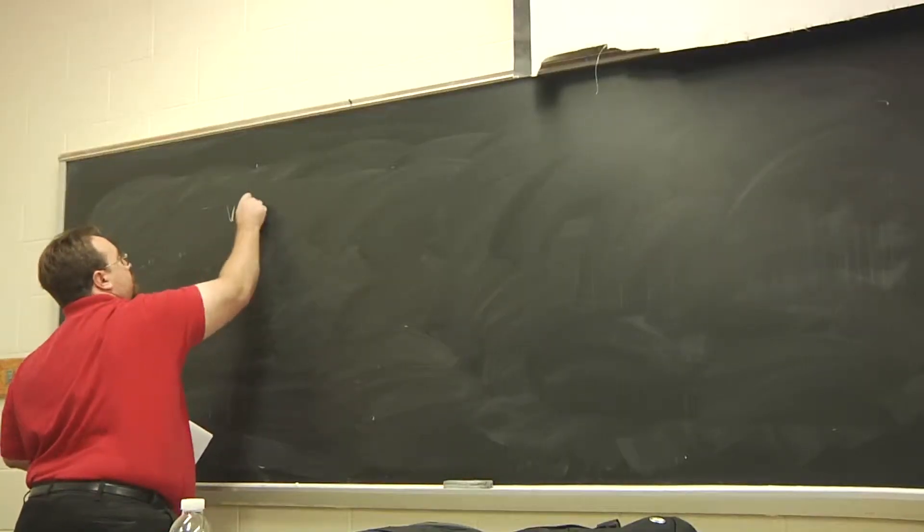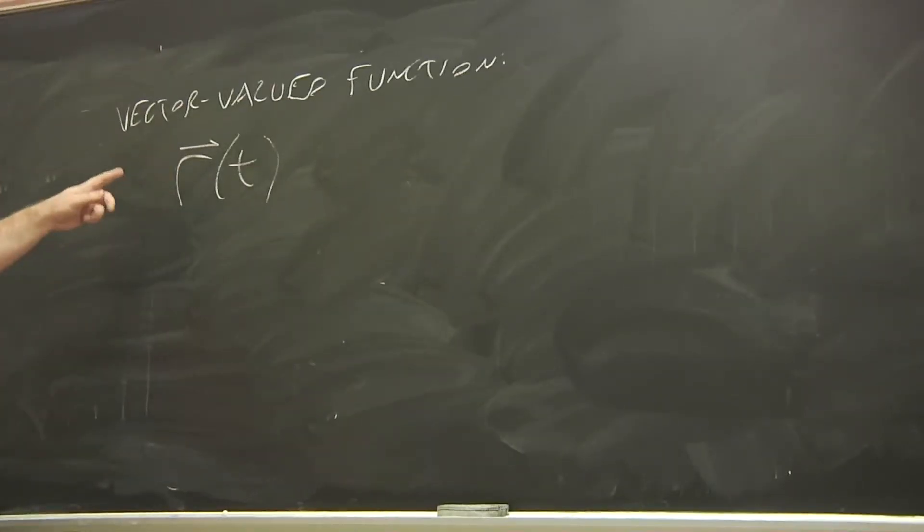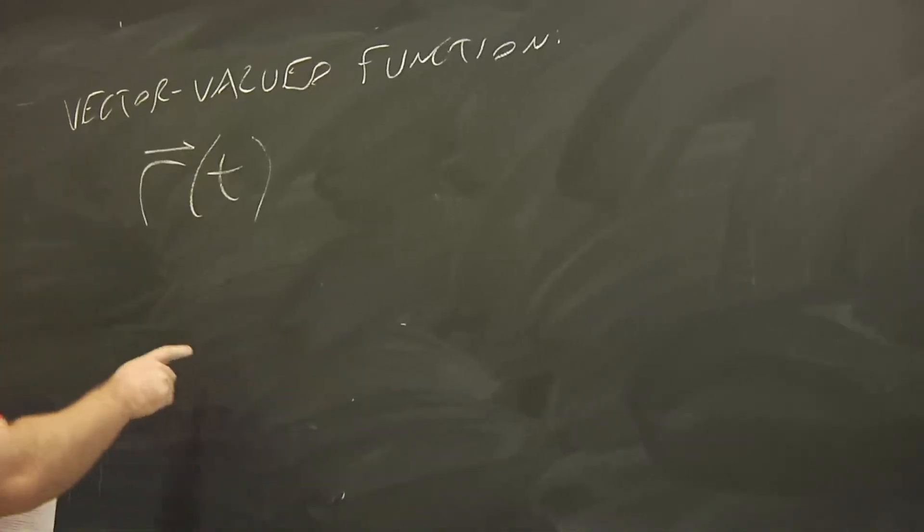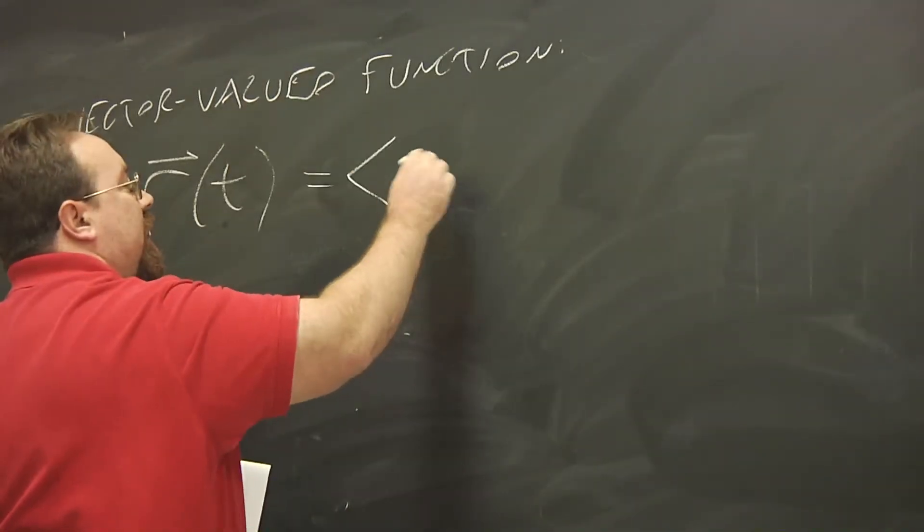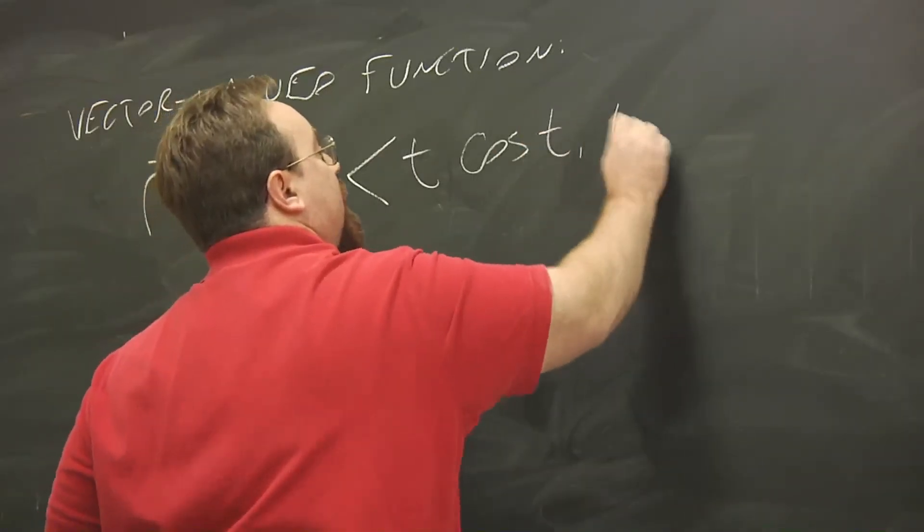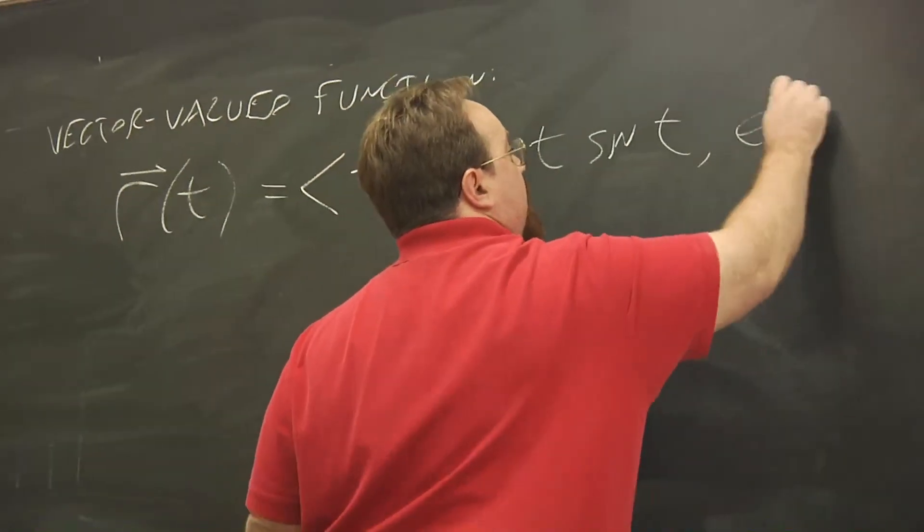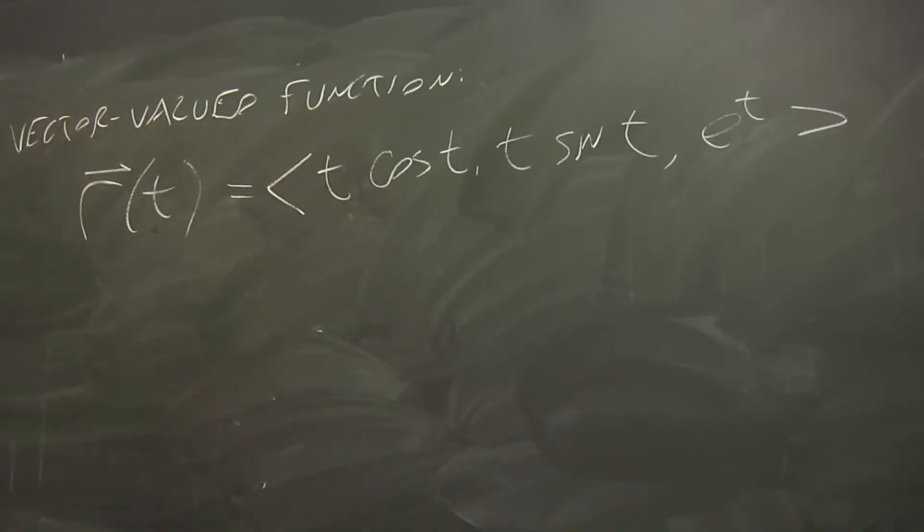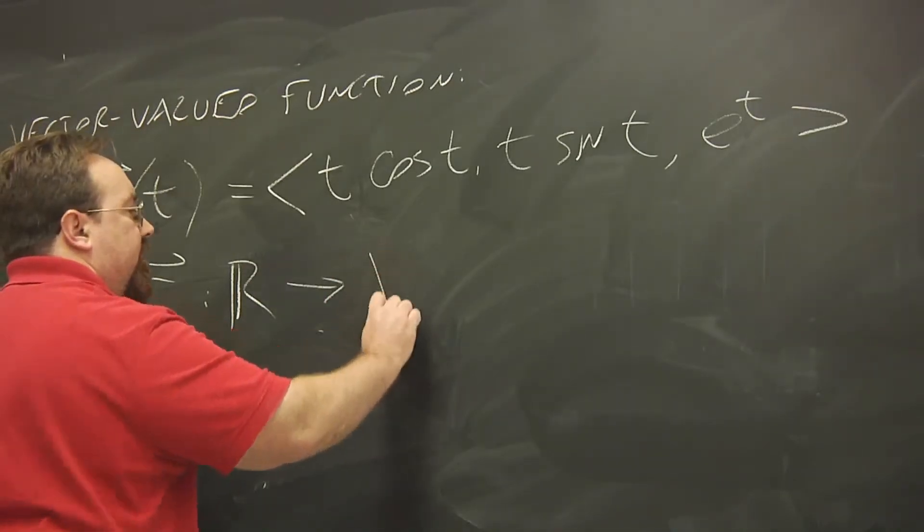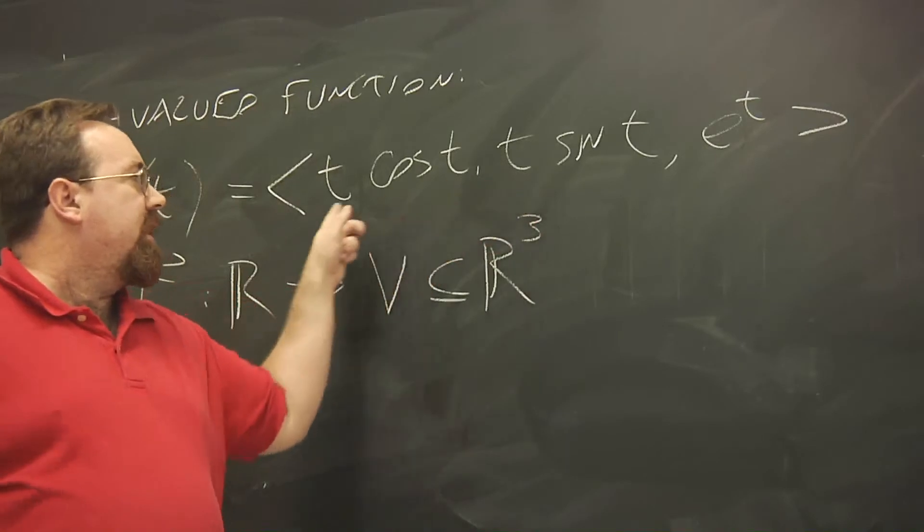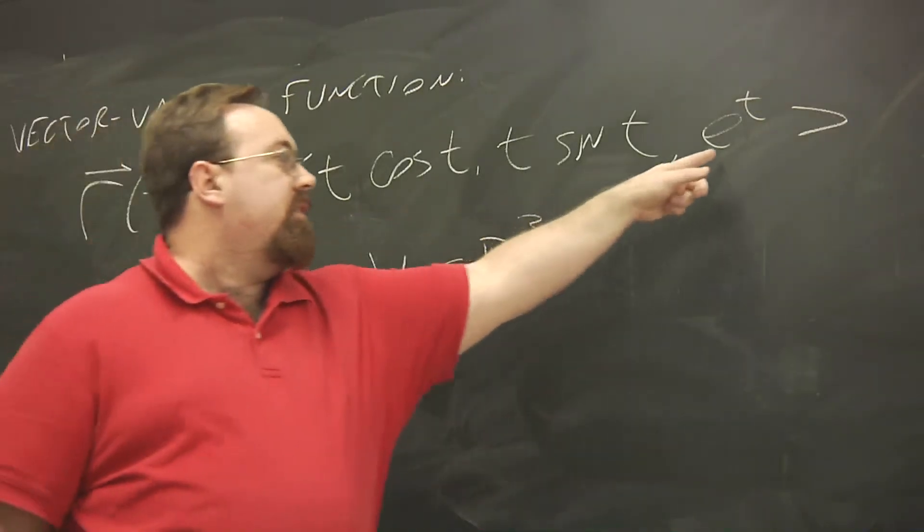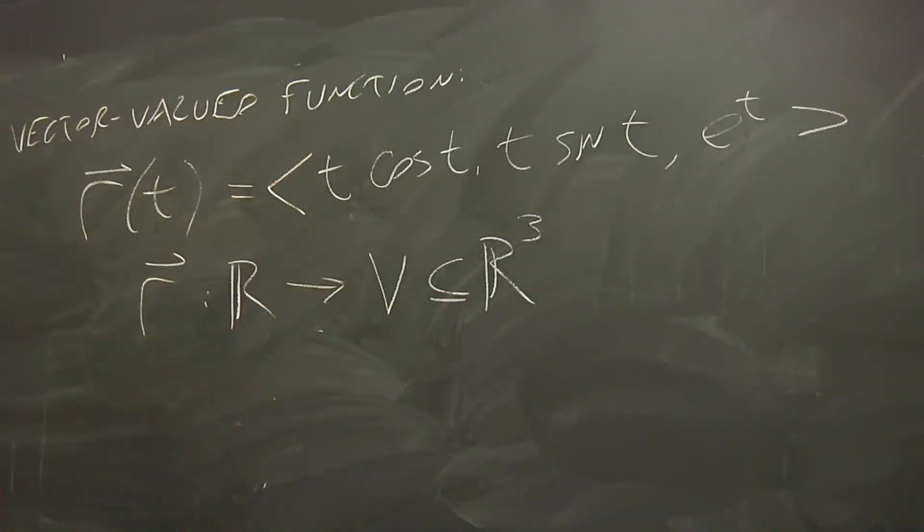A couple examples of those. Here's an example of a vector-valued function. And I'm using this arrow here to indicate that it's a vector. But it's a vector-valued function of only a single variable, t. We'll see quite a few of these. So the vector has components, t cosine t for the x, t sine t for the y, and e^t for the z component. So this ends up mapping all of the real numbers. So you can plug in any t that you want into a domain, I'll call it v, which happens to be a subset of R³. Because these values, they can be anything. But e^t can only be positive.